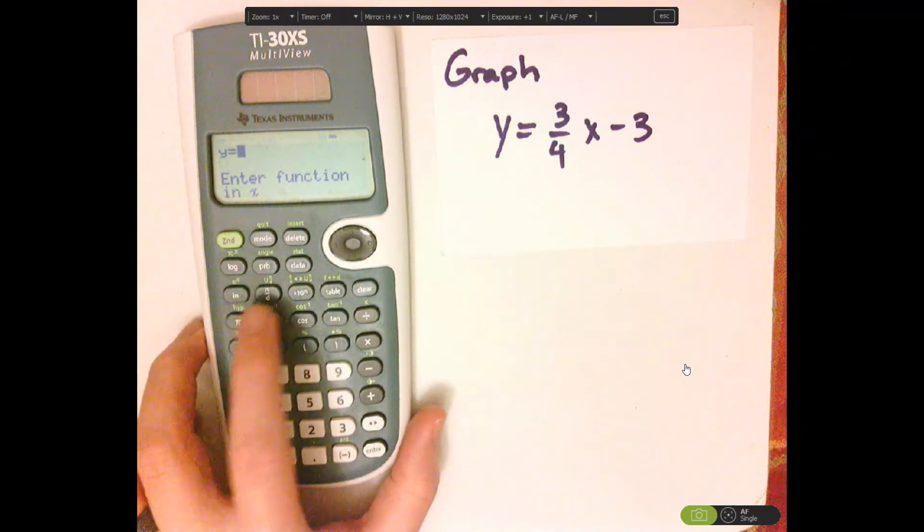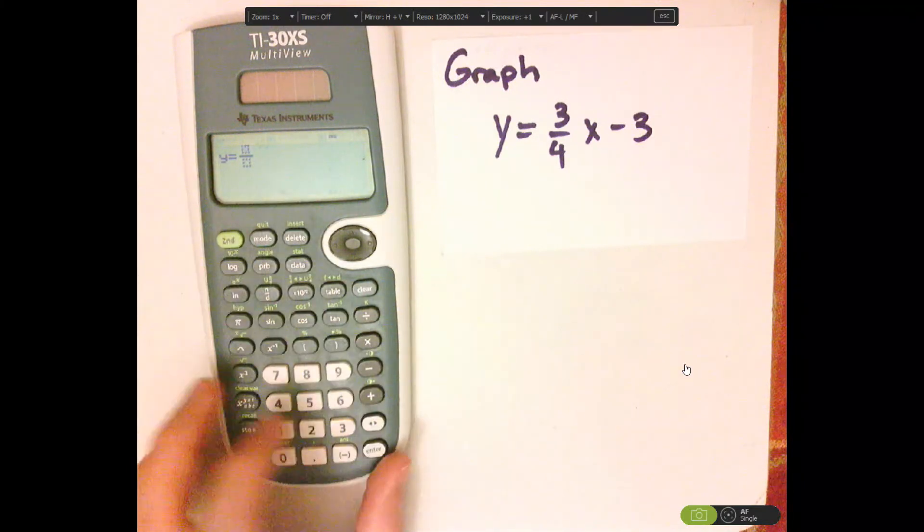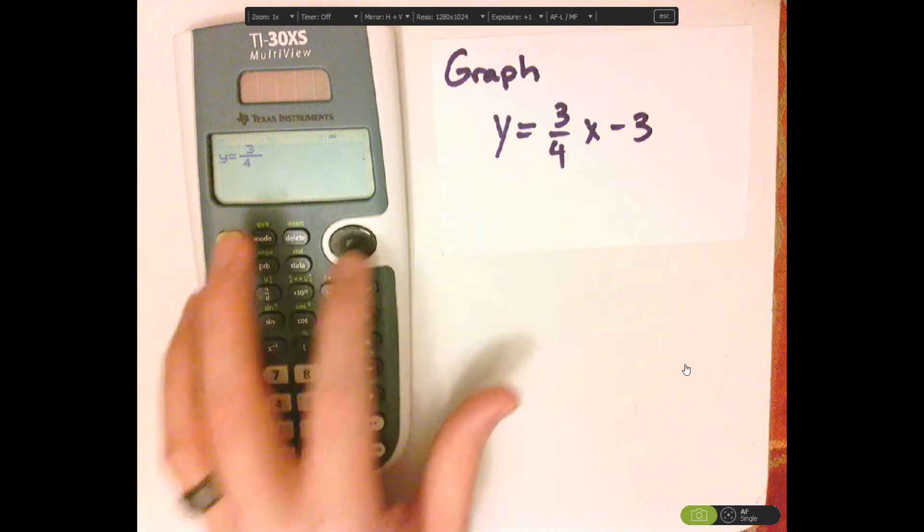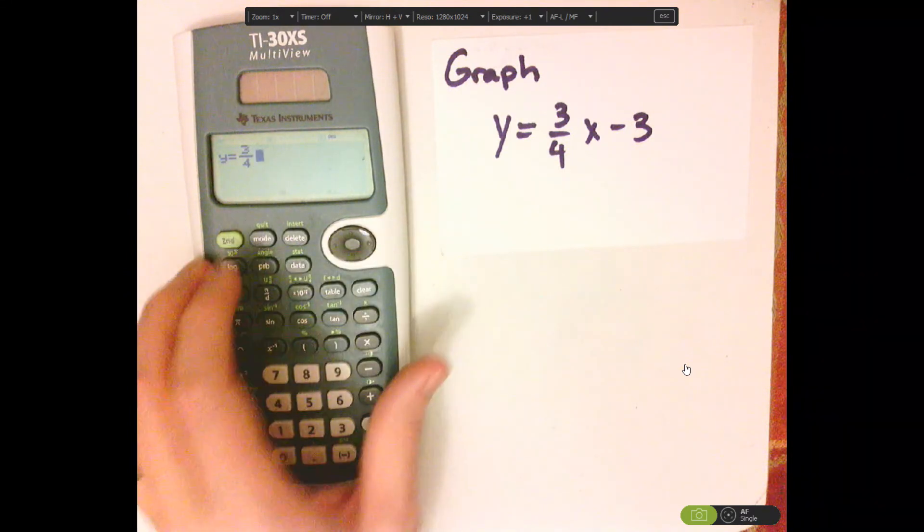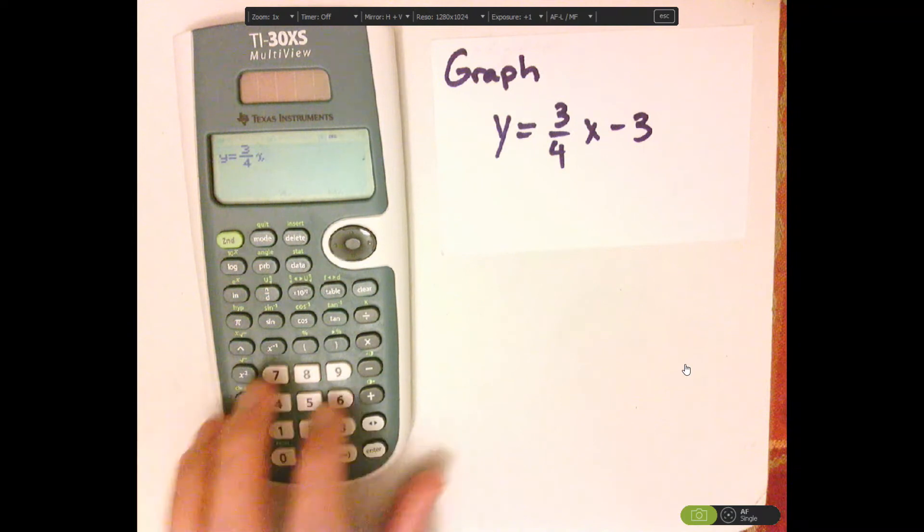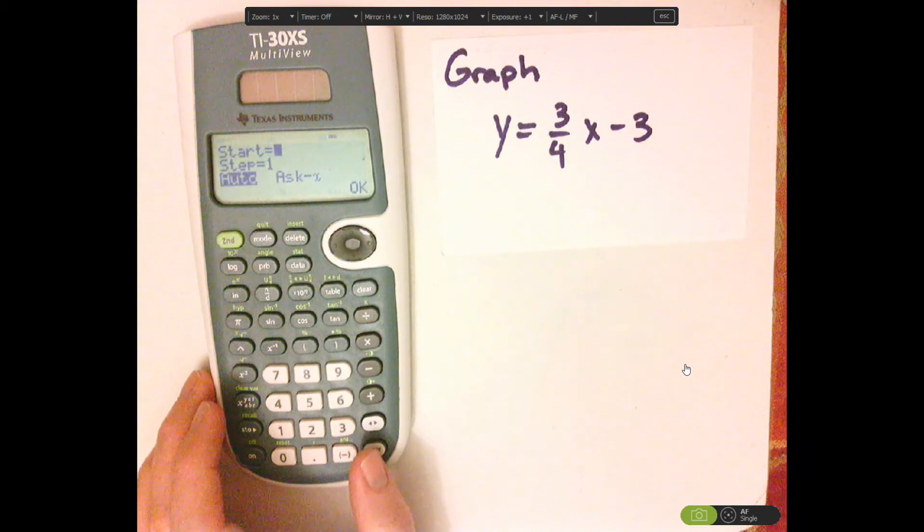So I'm going to type ND in math print, so it's 3 fourths X. You want to push the variable key, so X minus 3, enter.